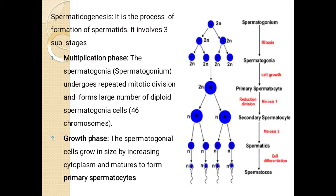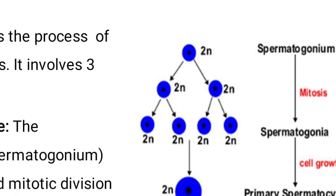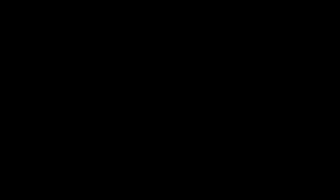In the multiplication phase, mitotic division occurs through which from one spermatogonium, 4 spermatogonia are formed. You can easily see in the structure — it is 2n. When their mitosis occurs, one cell forms 2 cells and 2 cells form 4 cells, which we have named spermatogonia.